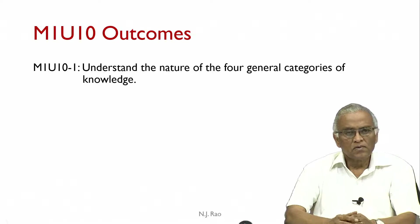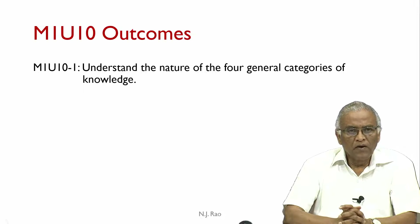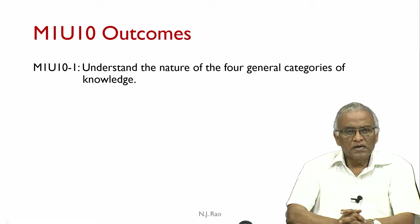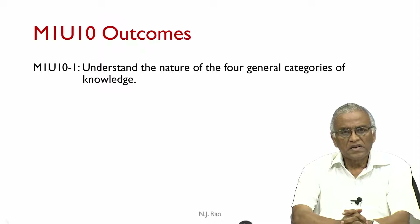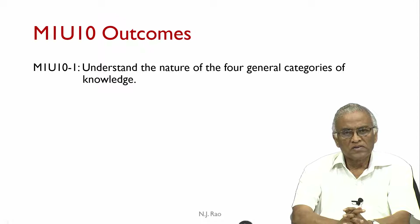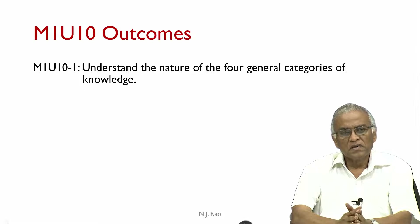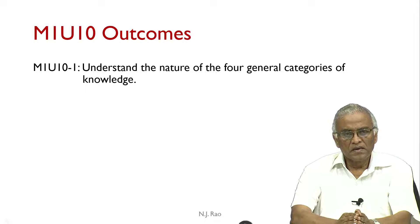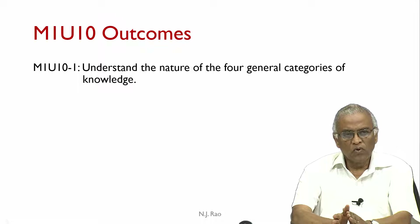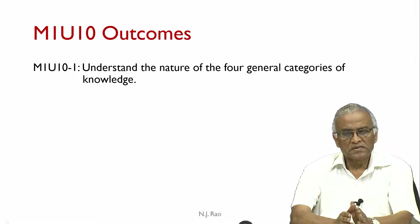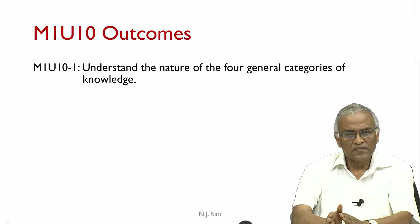Now, in Unit 10, we try to understand the nature of the four general categories of knowledge. We have already mentioned that the cognitive domain is characterized by two dimensions: one is cognitive processes, and the other is categories of knowledge.